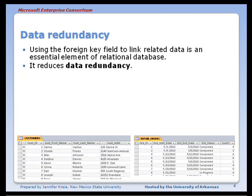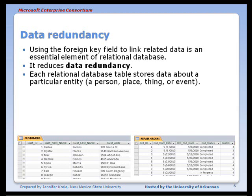Using the foreign key field to link related data is an essential element of the relational database. It reduces data redundancy — this is a key benefit. Each relational database stores data about a particular entity: a person, a place, a thing, or event. So we have a person, customer, and we have an event, a repair.